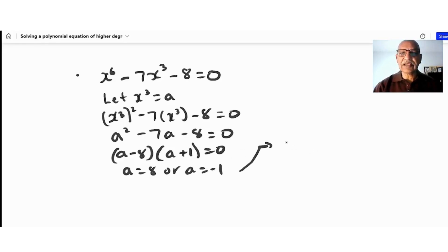If a = 8, then x^3 = 8 since a = x^3. Therefore, x is the cube root of 8, which is 2.